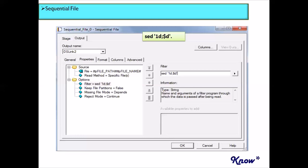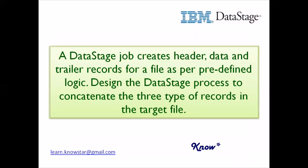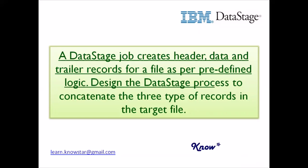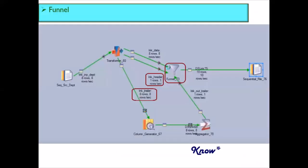Now the next scenario is the reverse. We are going to generate the header and trailer records, assuming they have already been generated in the DataStage job as per some predefined logic. Our challenge is to concatenate all those header, trailer, and data records in the right order in the target sequential file. The question goes something like: a DataStage job creates header, data, and trailer records — design the DataStage process to concatenate the three types of records into the target file.